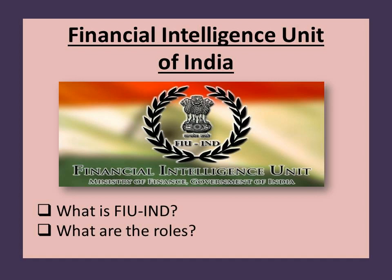Four: Act as Central Repository. Establish and maintain a national database on the basis of reports received from reporting entities. Five: Coordination. Coordinate and strengthen collection and sharing of financial intelligence through an effective national, regional and global network to combat money laundering and related crimes.